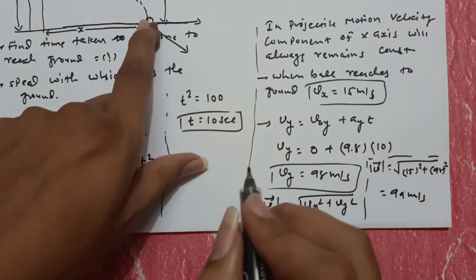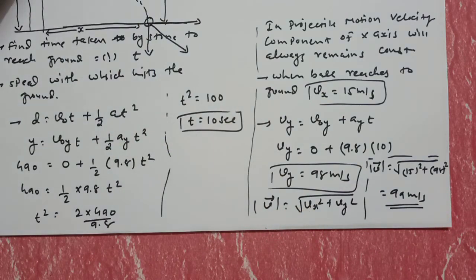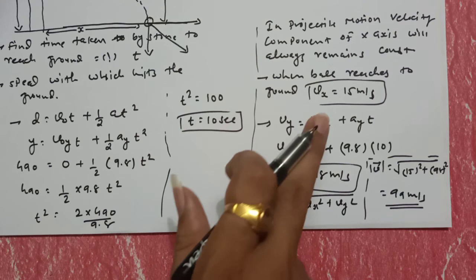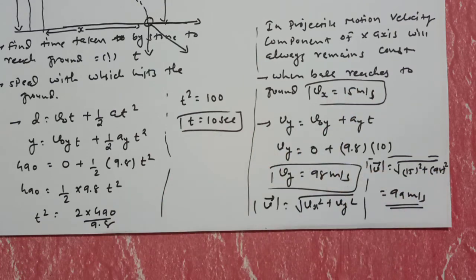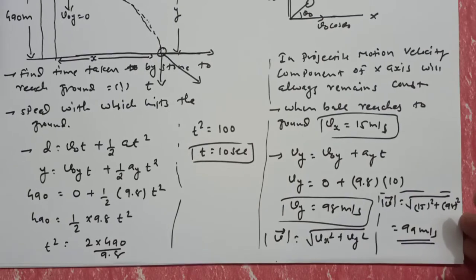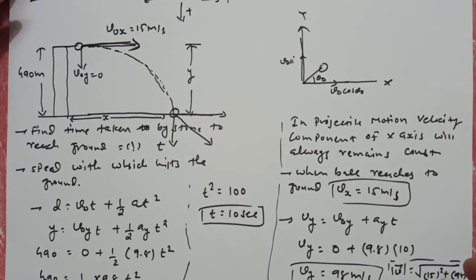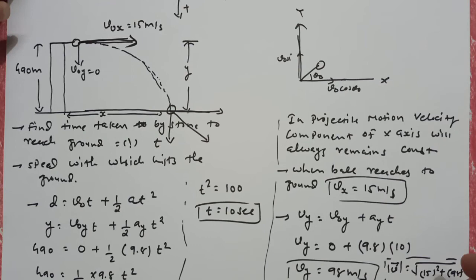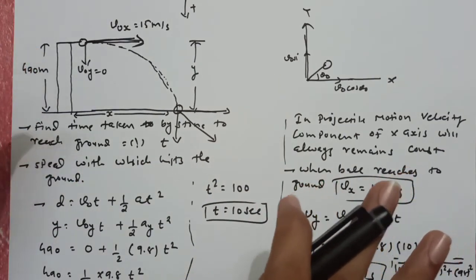तो यहाँ पे ball जब पहुँचेगा, तब उसकी final velocity होगी 99 meter per second. X-axis की होगी 15, y-axis की 98, और vectors का total यह velocity होगी। Textbook में तो कुछ भी समझ नहीं आएगा, जितना simply इसको solve कर सकते थे हमने किया है। Parallelly लिखते जाना, लिखते लिखते इसको solve करना, हो जाएगा।